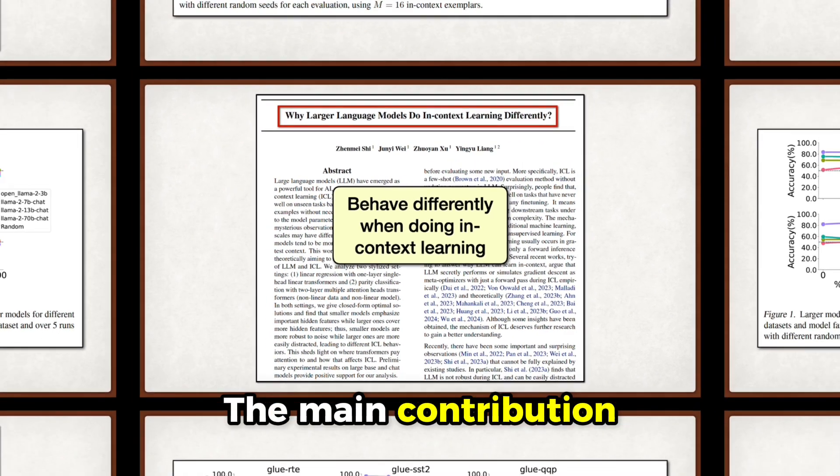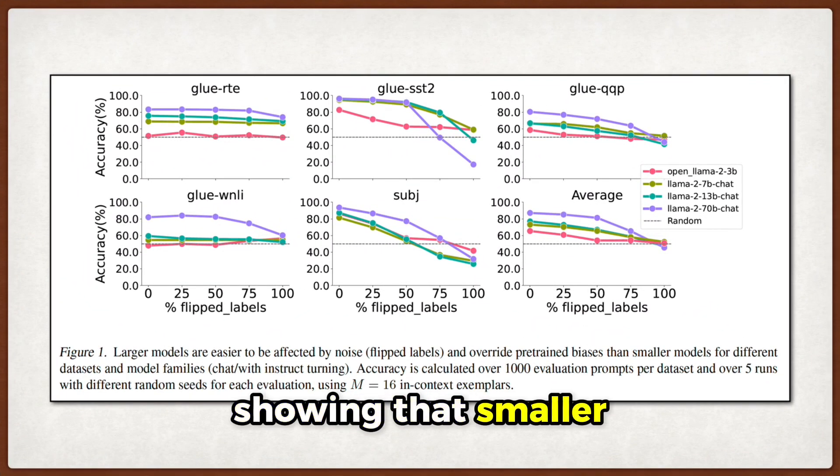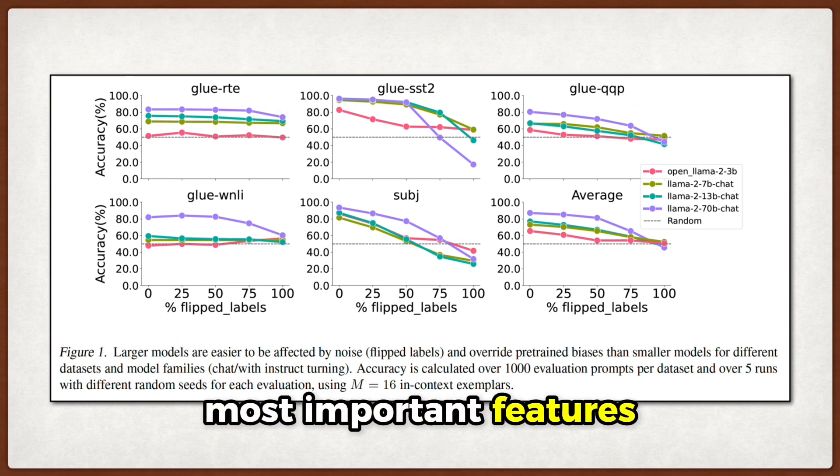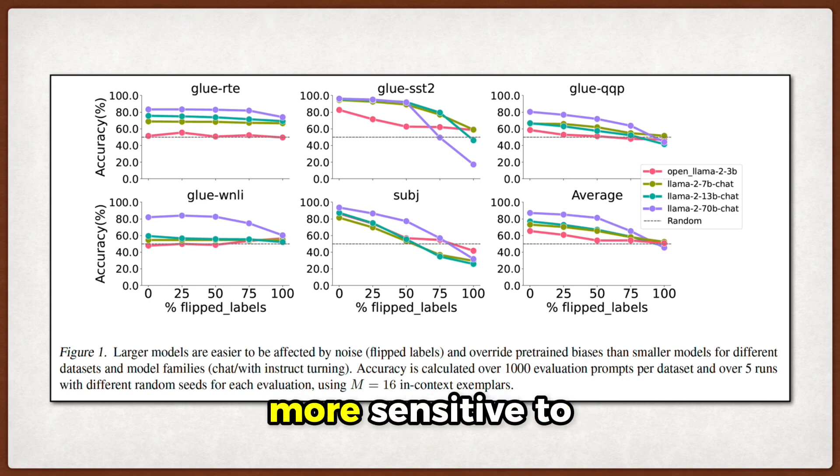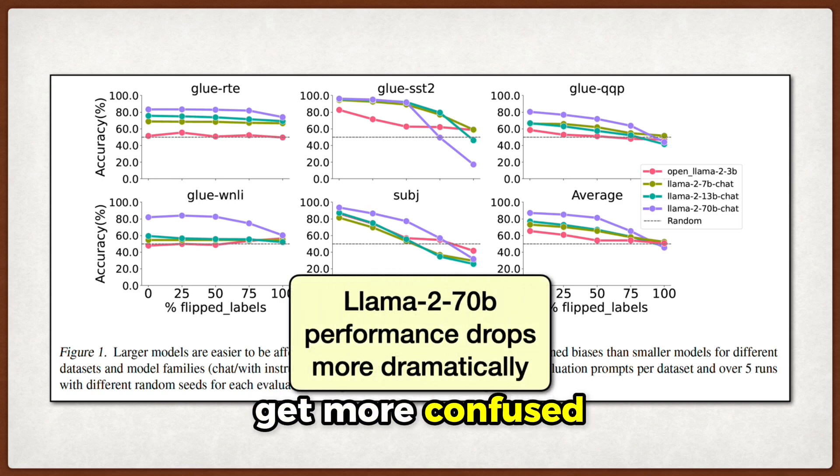The main contribution here is that they provide a theoretical analysis showing that smaller models focus on the most important features, while larger models try to cover everything, which makes them more sensitive to noise. They back this up with experiments on the Lama model family, showing that larger models indeed get more confused when you flip labels in the prompts.